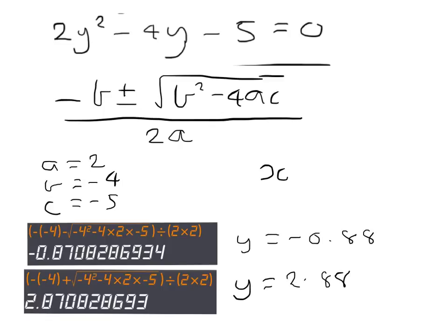Now remember that x equals 2 minus y. So in my first case, we're going to have x equals 2 minus minus 0.88, which equals 2.88. And then 2 subtract 2.88 gives me minus 0.88. So those are the solutions.